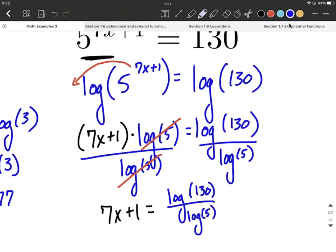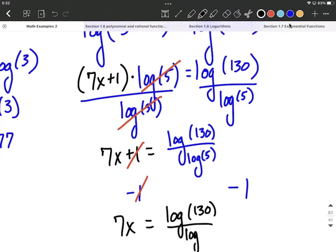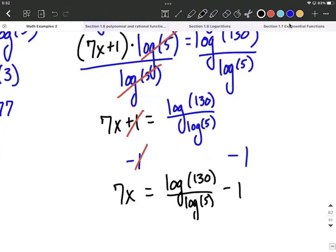That will not simplify down, by the way. You can't say 130 divided by 5 and reduce that down because each one has its own logarithmic function attached to it. The remaining steps really aren't that bad here. We need to move the 1 to the other side and the 7 to the other side. To do so, I'm going to first subtract 1 from both sides. That'll leave us with 7x on the left-hand side as adding and subtracting 1 are opposites. On the right-hand side, we now have log of 130 divided by log of 5 with a minus 1 hanging out at the end.